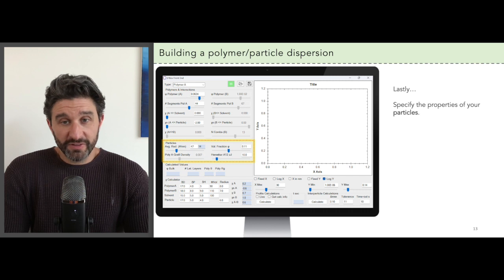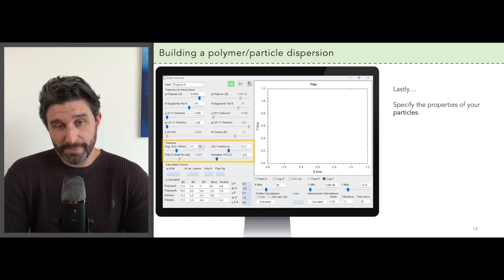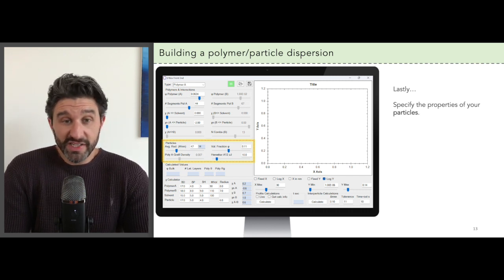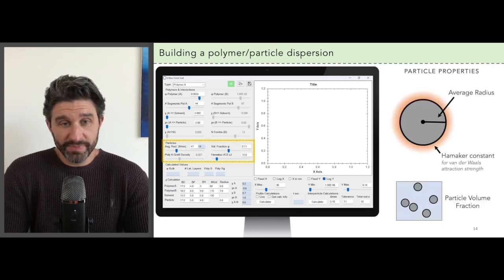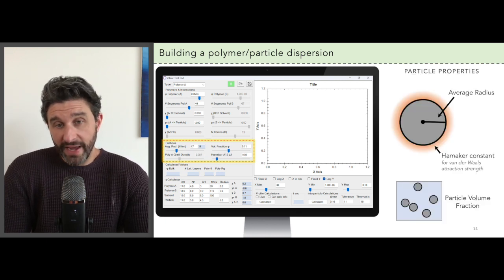Now the last step is to specify the properties for the particles in your dispersion. This is actually really straightforward. You first specify the radius of the particles. This is just an average.